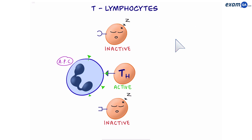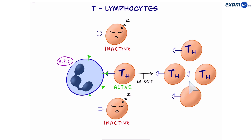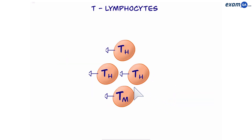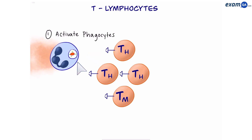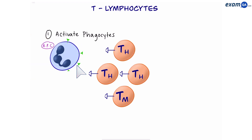This T helper cell is now going to divide by mitosis into many copies. Notice all of the copies have the same receptor as the activated T helper cell. From the copies, we have lots of T helper cells, but also T memory cells. Some of the T helper cells activate phagocytes. These phagocytes will then go find pathogens and do phagocytosis, just like before, producing a new APC.